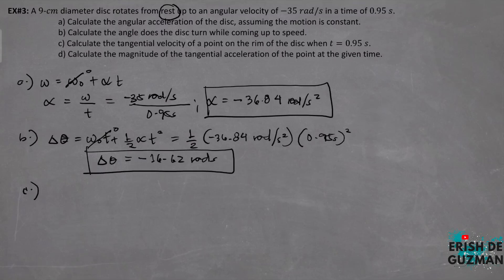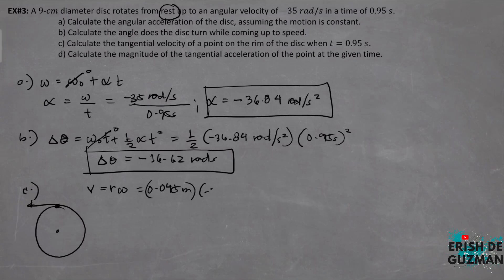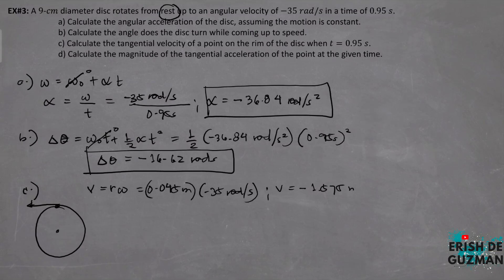For letter C, we calculate the tangential velocity of a point on the rim at t equals 0.95 seconds. Yung tangential velocity — the linear velocity of a point on the rim — uses the relationship: tangential velocity equals radius times angular velocity. Ang radius natin is kalahati ng diameter, 9 divided by 2, so 4.5 centimeters or 0.045 meters, times the angular velocity of negative 35 radians per second. Tangential velocity is equal to negative 1.575 meters per second.